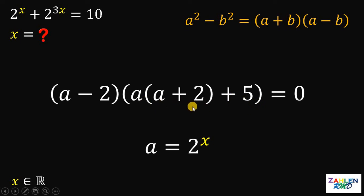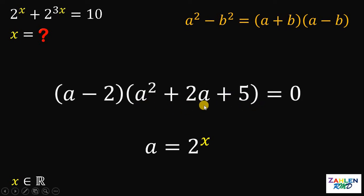Let's distribute this a. This will give us a squared plus 2a. Since it is equal to 0, it follows that at least one of them must be equal to 0.